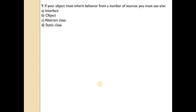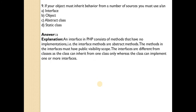If your object must inherit behavior from a number of sources, you must use — answer is A — Interface. An interface in PHP consists of methods that have no implementation; that is, interface methods are abstract methods. The methods in interfaces must have public visibility scope. Interfaces differ from classes in that a class can implement one or more interfaces.